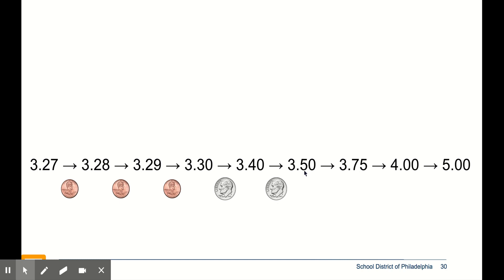I could keep adding dimes if I want, but one thing I know about money is that quarters are 25 cents. And now that I'm at 50 cents, I could add a quarter to get to $3.75, another quarter to get to $4.